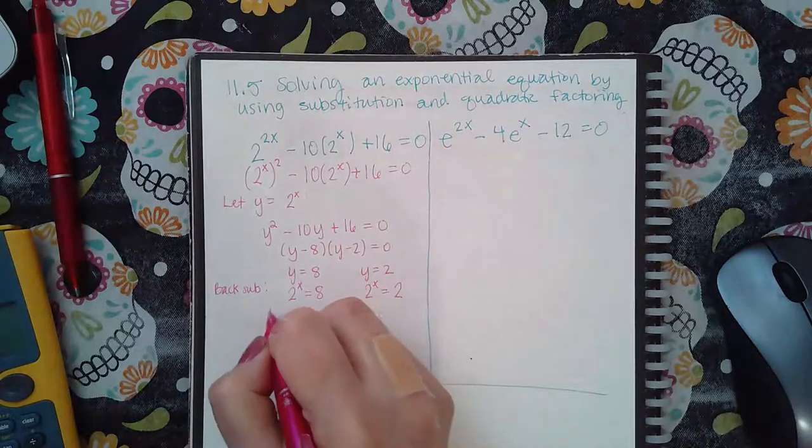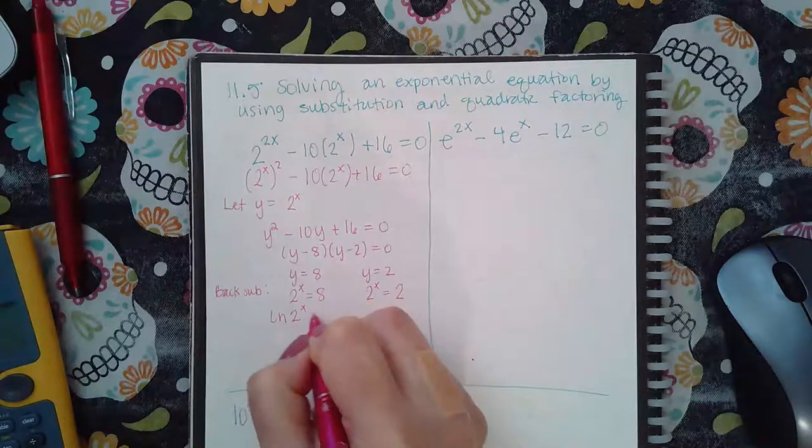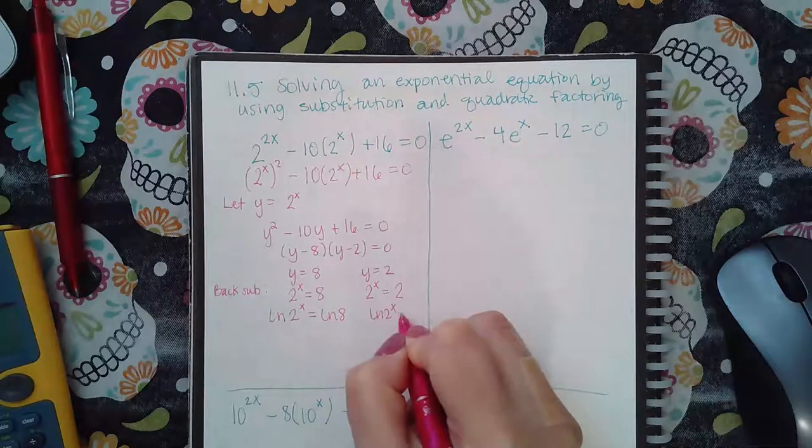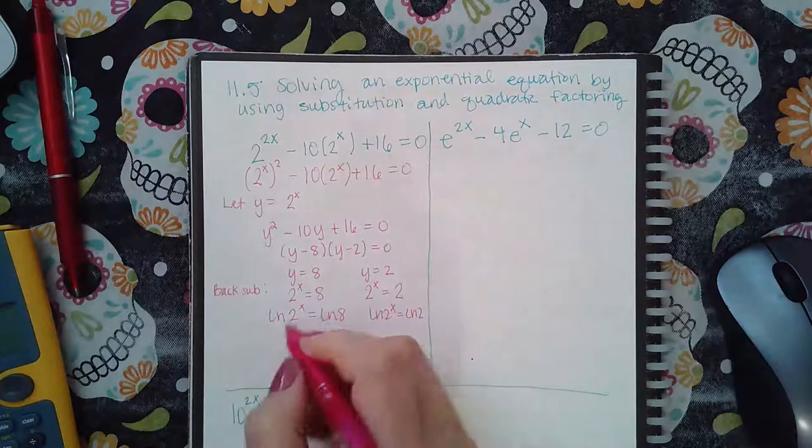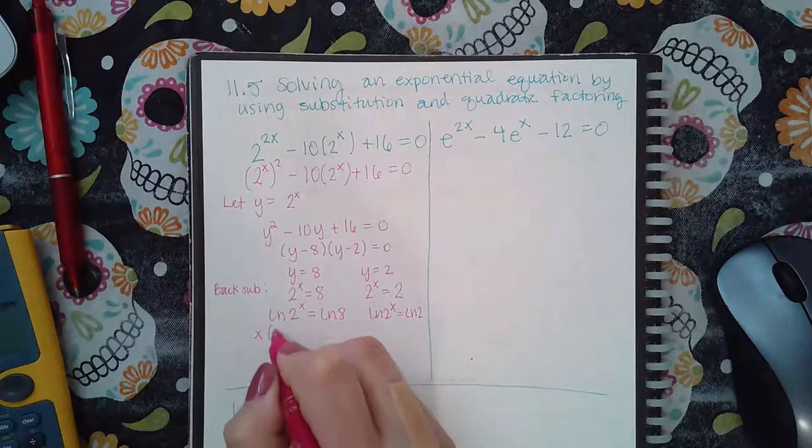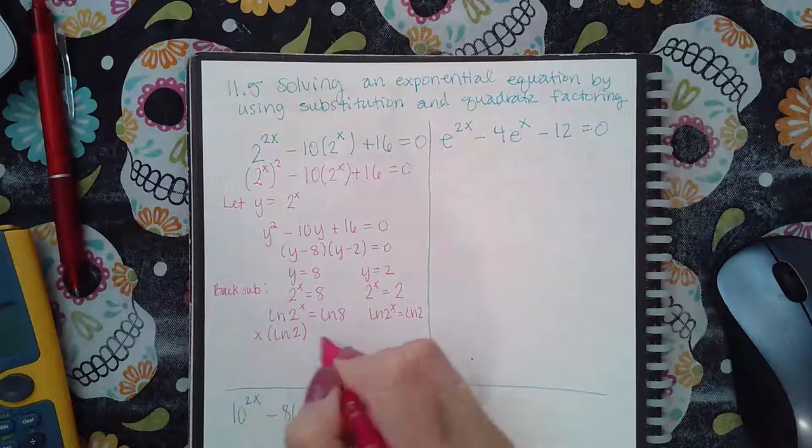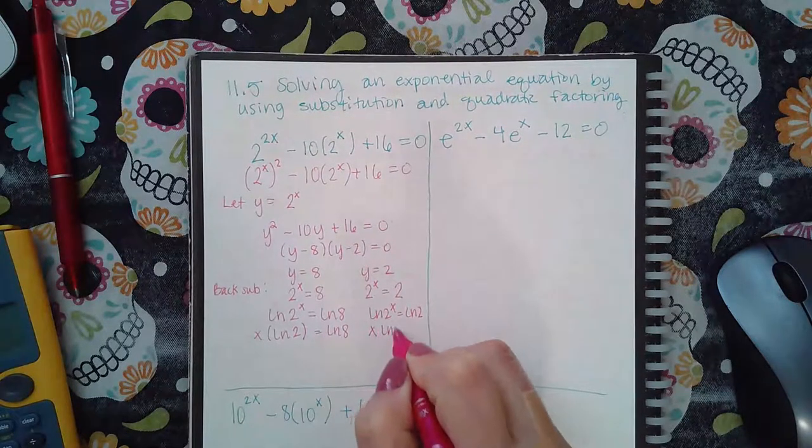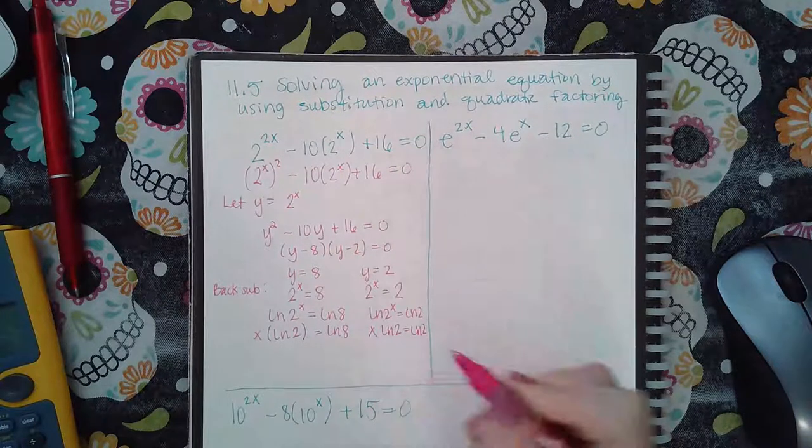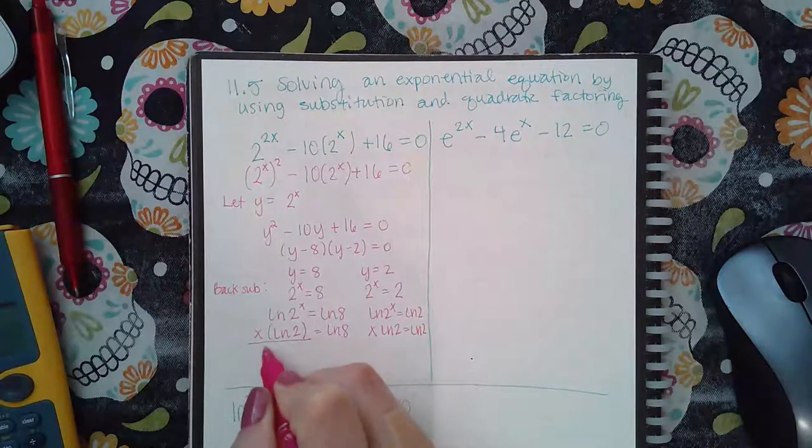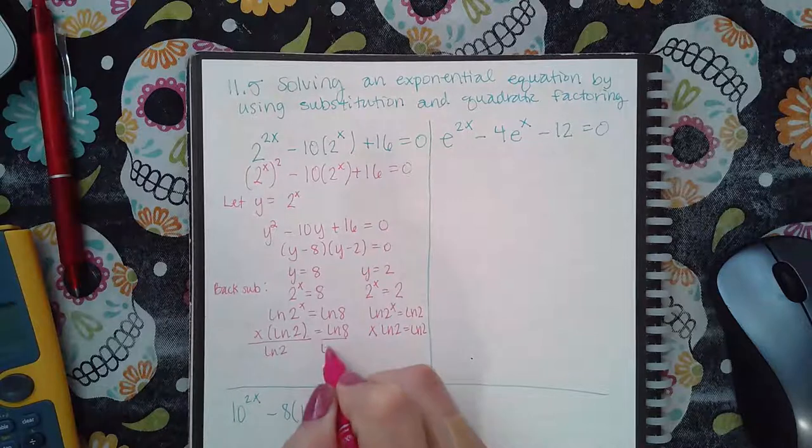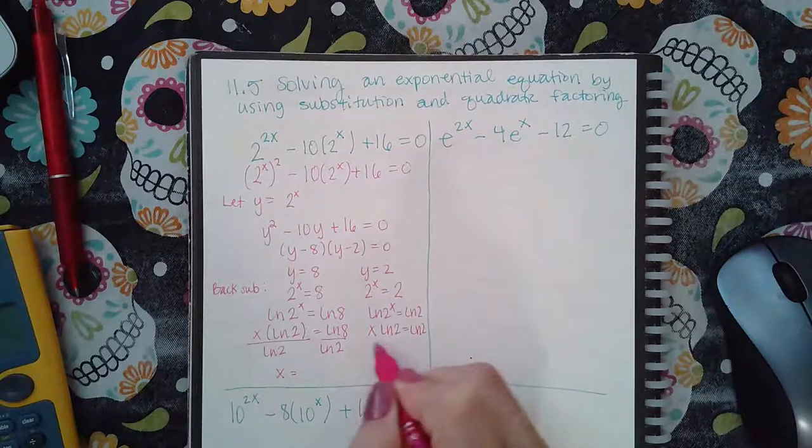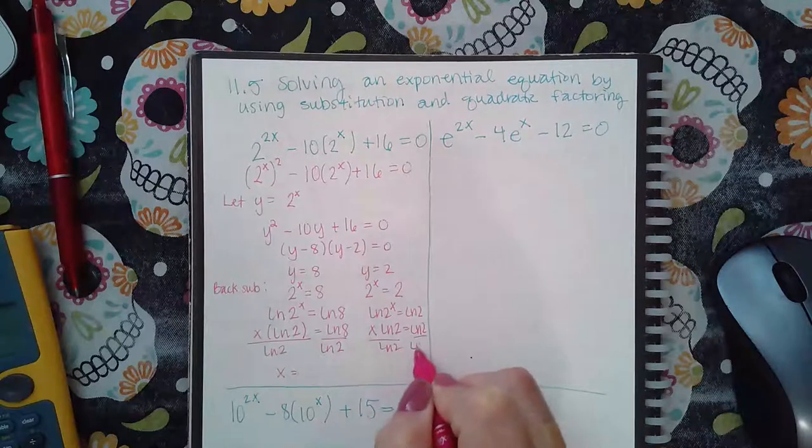And so then if I take the ln on both sides, we will move the x over, so we get x times ln of 2. And then divide by that number that's being multiplied by x, so that you can get x alone. And then the same thing here, divide by ln of 2.